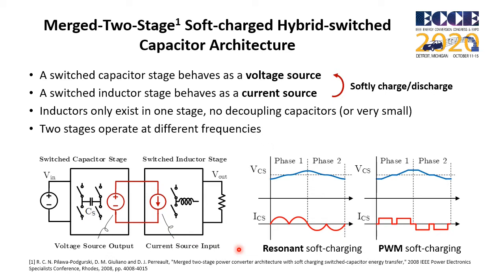Two stages normally operate at different frequencies. There are two types of soft-charging mechanisms. With resonant soft-charging, the capacitor current is a sinusoidal wave. With PWM soft-charging, the capacitor current is a square-pause wave.